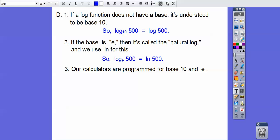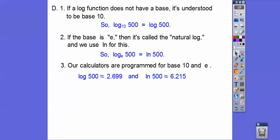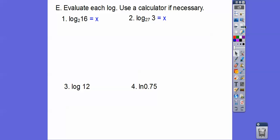For example, the log base e of 500 is, in our calculator, the natural log of 500. That just means it's base e. Our calculators are programmed for base 10 and base e, so if you punch in your calculator log of 500, you'll get about 2.669, and if you punch in the natural log of 500, you get about 6.215. Well, that just means this base to this power equals this. So 10 to this power will be almost 500, and then e to this power will be almost 500.